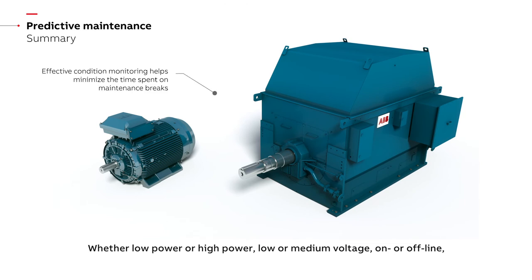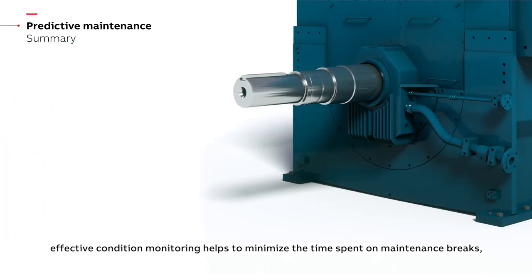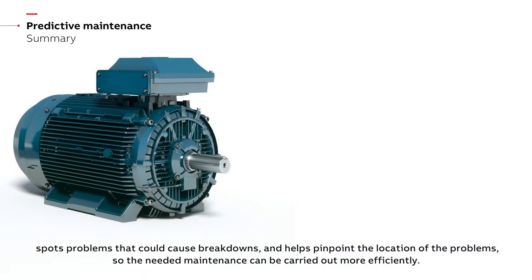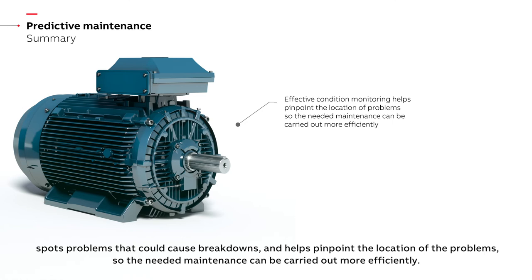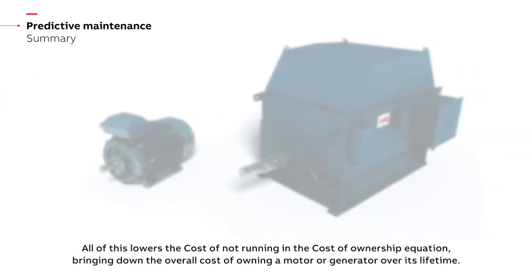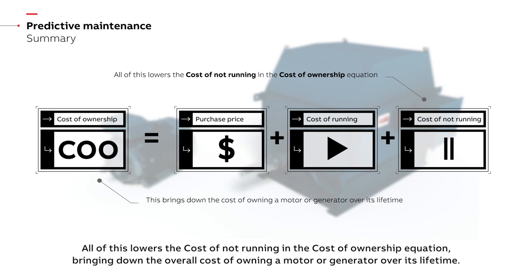Whether low power or high power, low or medium voltage, on or offline, effective condition monitoring helps to minimize the time spent on maintenance breaks, spots problems that could cause breakdowns, and helps pinpoint the location of the problems so the needed maintenance can be carried out more efficiently. All of this lowers the cost of not running in the cost of ownership equation, bringing down the overall cost of owning a motor or generator over its lifetime.